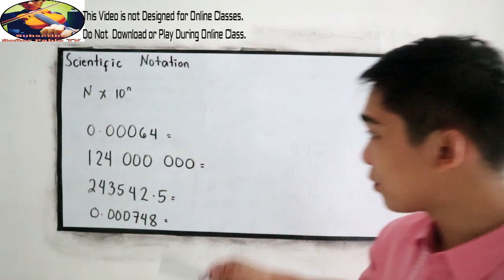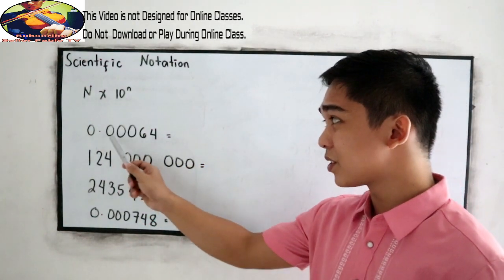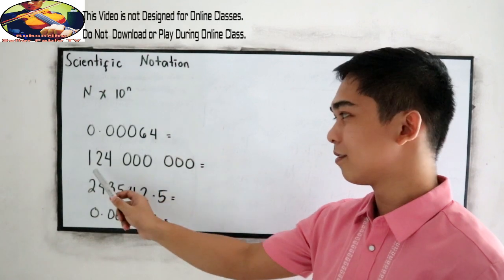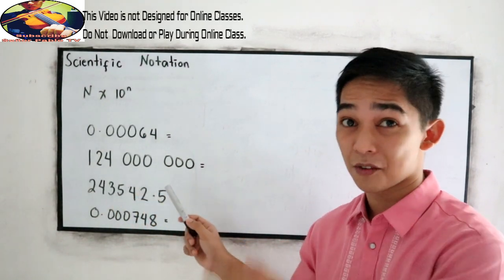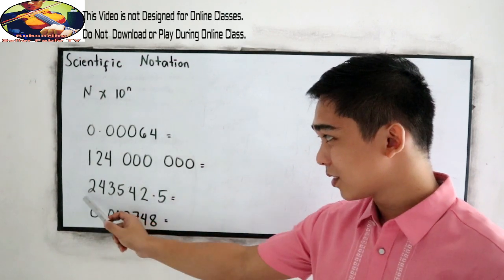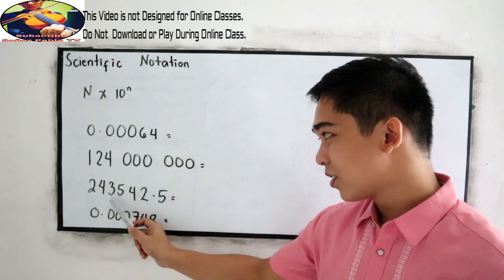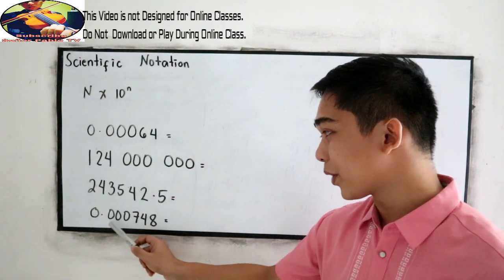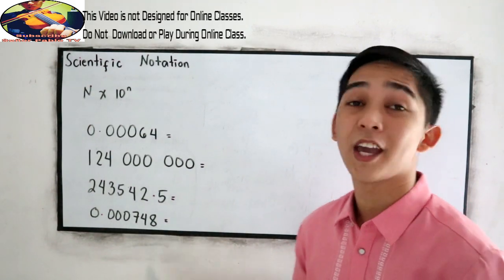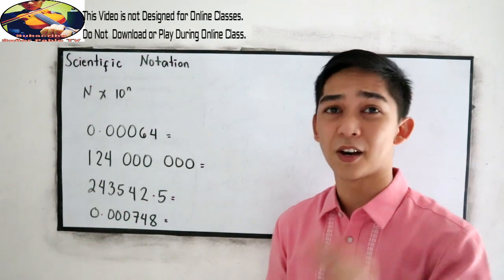Let's say we have the following numbers: 0.0064, 124 million, which is a very large volume, 243542.5, and 0.000748, which is a very small volume.